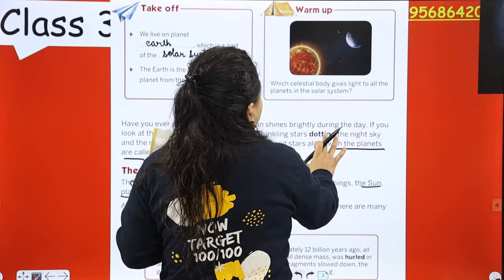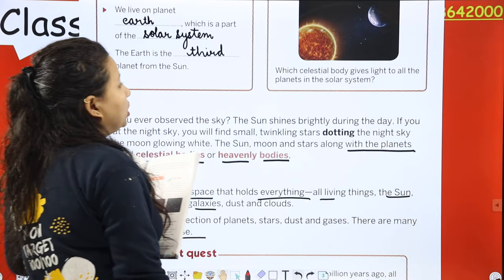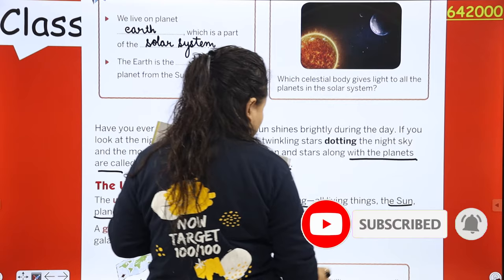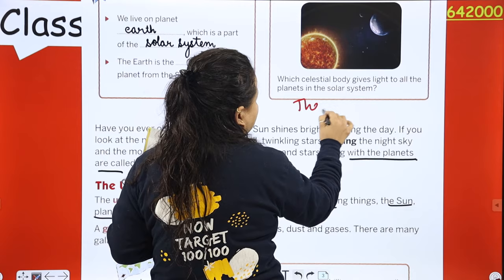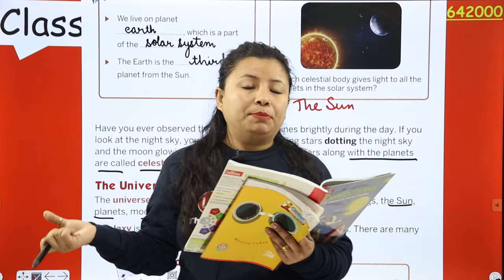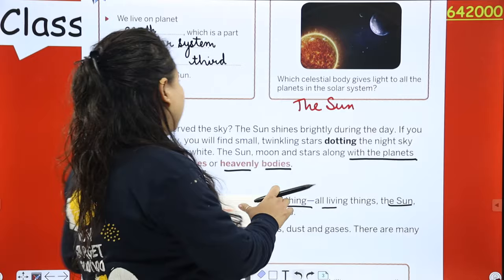Which celestial body gives light to all the planets in the solar system? The answer is: the sun gives heat and light to all the planets in the solar system.